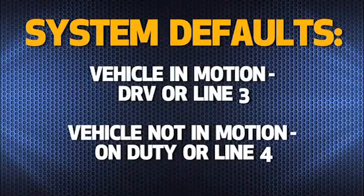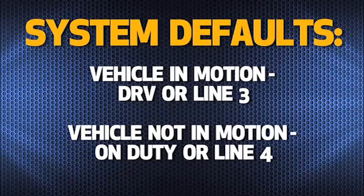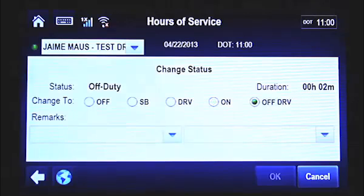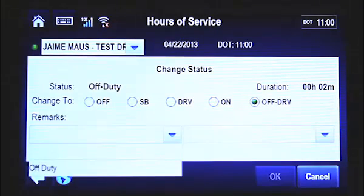Note that if you don't change your duty status to DRV or Line 3 before you start driving, the system automatically moves you to DRV status and locks you out of the Hours of Service application. If you forget to change your duty status after you stop driving, the system defaults you to On Duty or Line 4. If you need to change to Off Duty, Driving or Personal Drive Time, you must first get approval over the Qualcomm through a Macro 52. Once approval is granted, you'll be able to select the Off Duty, Driving field and change your duty status to Personal Drive Time.